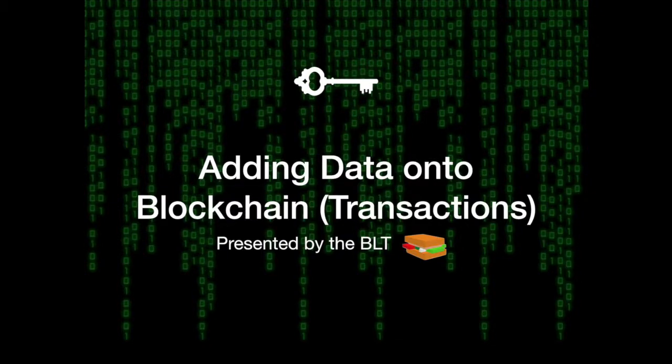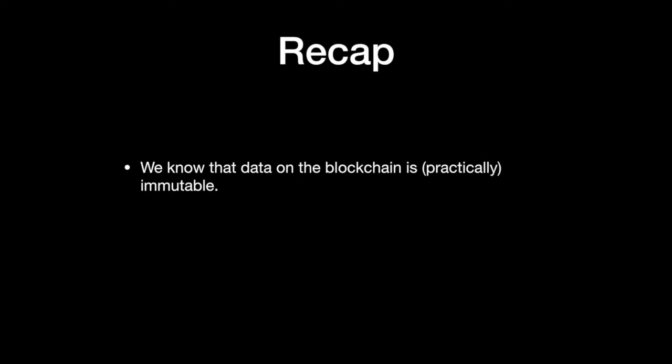In this video, I'll explain conceptually how data is added onto blockchains and how transactions work in blockchains built for cryptocurrencies like Bitcoin. In 'What is Blockchain,' we talked about how secure and immutable data is on a blockchain. If you haven't watched that yet, I highly recommend you do so. So how do we add new information? A place to store information without being able to add to it isn't too useful.